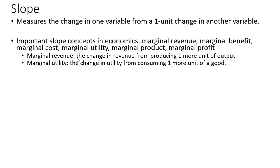For example, marginal revenue is the change in revenue from producing one more unit of output. Marginal utility is the change in utility from consuming one more unit of a good. Marginal cost is the change in cost from producing one more unit of a good, and so on.